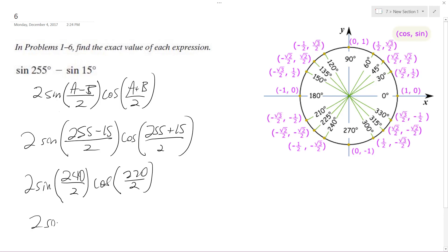So it's 2 sine of 120 times the cosine of 135.